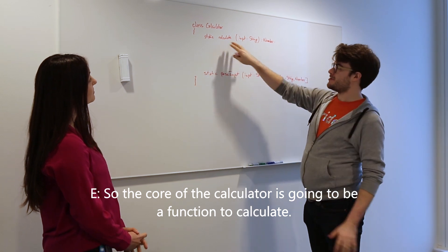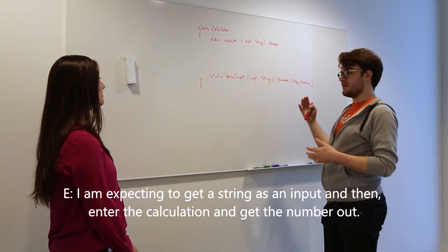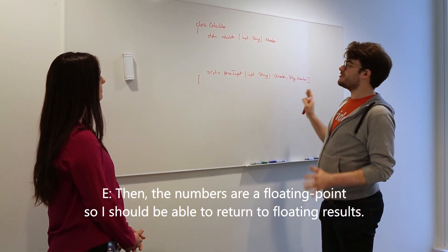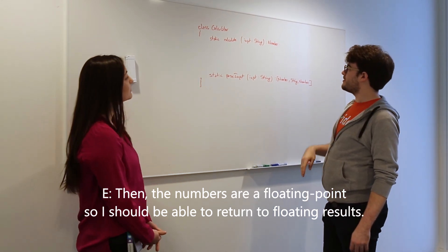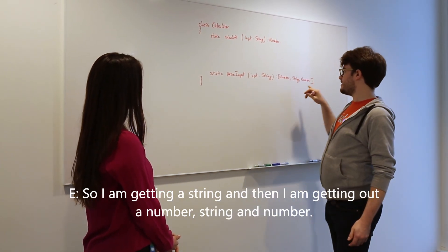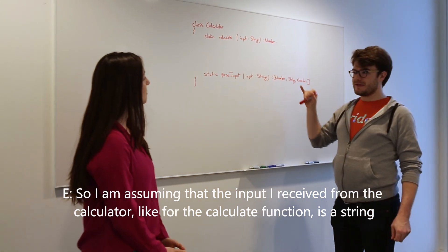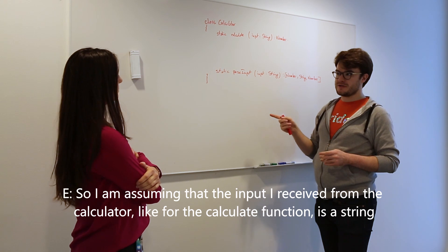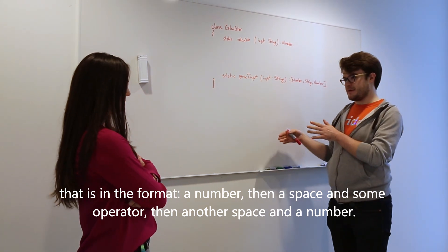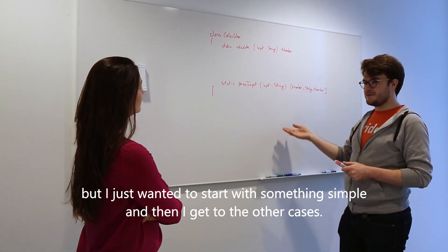So the core of the calculator is going to be a function to calculate. I'm expected to get a string as input, then add to the calculation and get the number out. The numbers are floating point, so I should be able to return floating results. I'll probably need a helper function to parse my input — getting a string in and a number out. I'm assuming the input to the calculate function is a string in the format: a number, then a space, then some operator, then another space, then a number. It's not really covering all the cases, but I just want to start with something simple and then get to the other cases.